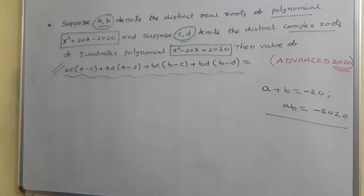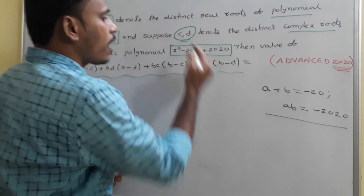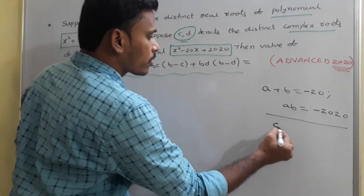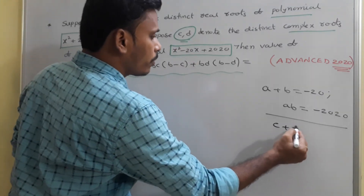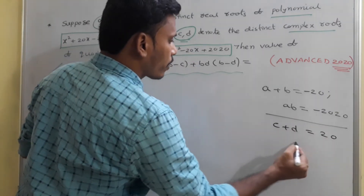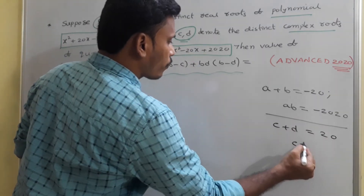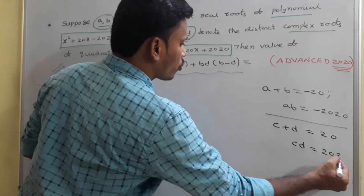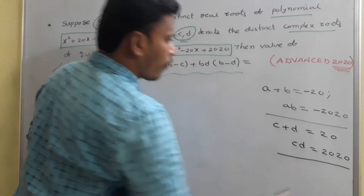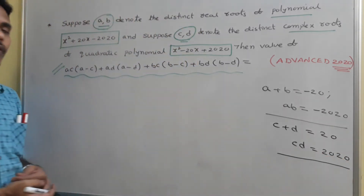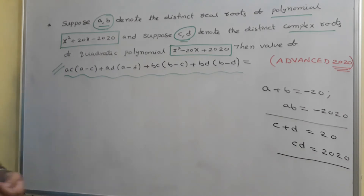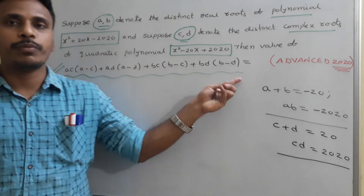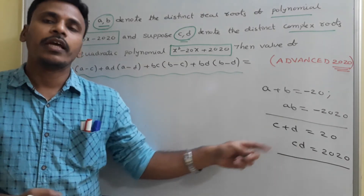In the same way, when you think about the second polynomial, since the roots are c and d, sum of the roots c + d is now 20, and product of the roots c × d is 2020. From the first and second polynomials, we have a + b, a·b, and c + d, c·d.